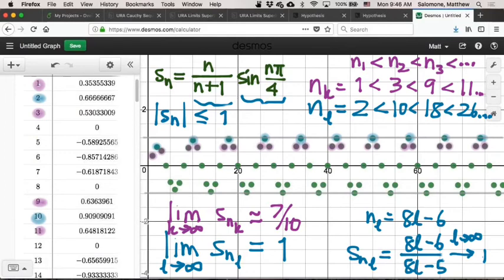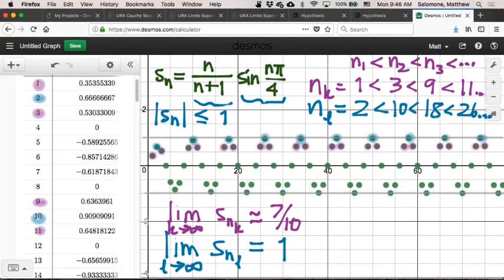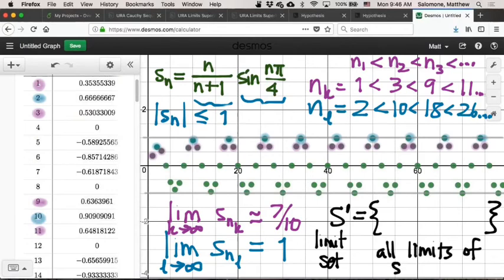But still, what we want to be able to do is come up with an idea of what are all of the different limits of all of the different subsequences of this sequence. And that's what's called the limit set, or sometimes the subsequential limit set of my sequence. It lists all possible limits of subsequences. All limits of convergent subsequences. And based on the work that you all did here, we know that that set is going to contain the element 1 because we found a subsequence which converges to 1. It's going to contain this number, which is approximately 7 tenths. By the way, spoiler alert, it's actually square root of 2 over 2. 0.7071 dot dot dot. And it might contain some other subsequential limits.